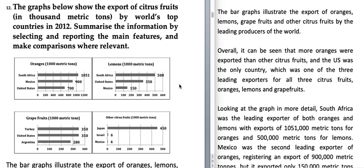All four bar graphs show the exports of citrus fruits. The first bar graph shows the export of oranges, the second shows lemons, the third shows grapefruits, and the fourth shows all other citrus fruits. The term 'thousand metric tons' was confusing for students.